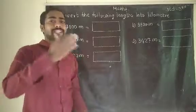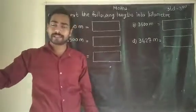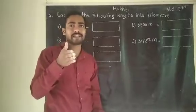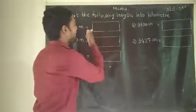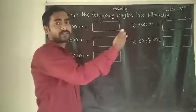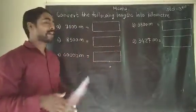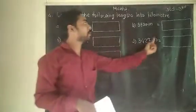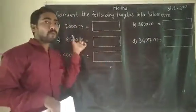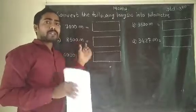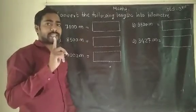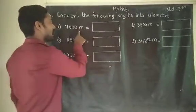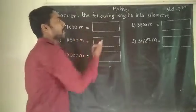In the previous example, we converted centimeter into meter — centimeter to meter and meter to centimeter. Now today we are converting the following length into kilometer. The length is given in meter, and we have to convert every meter value into kilometer.